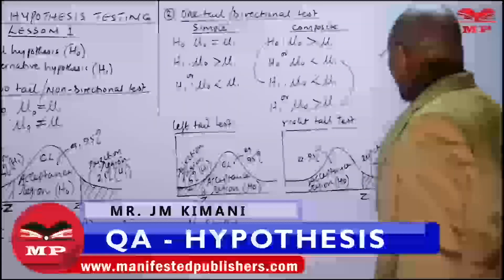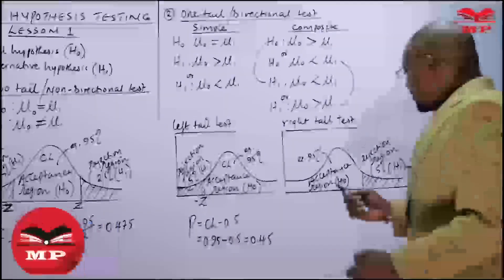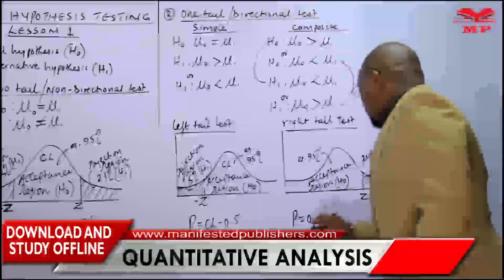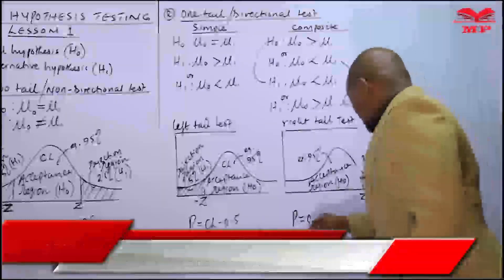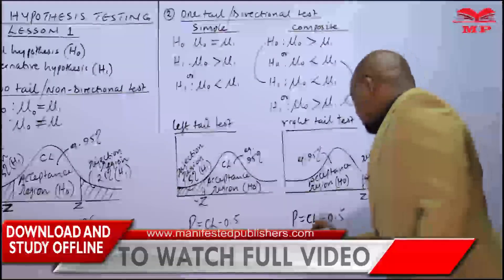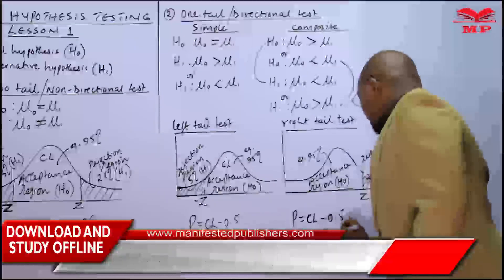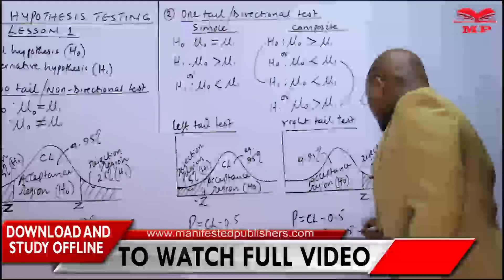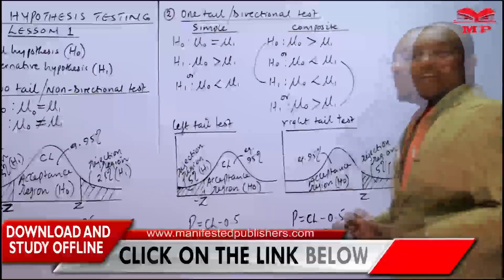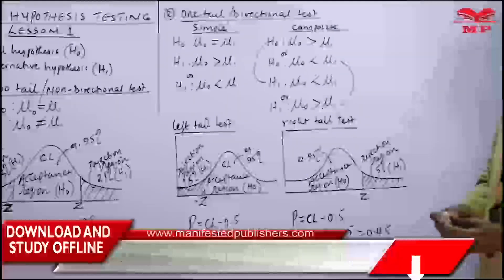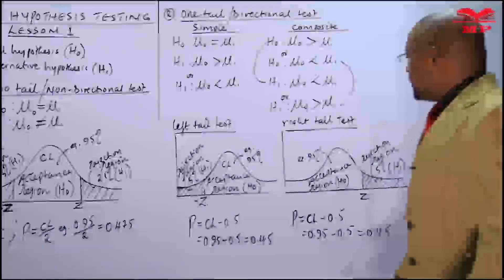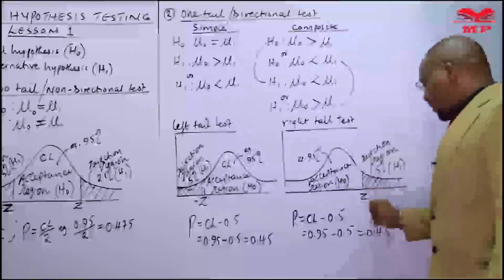For the right tail test, the same calculation applies — the probability is 0.95 minus 0.5, which is also 0.45. The only difference is that the value of Z in the left tail must be negative because we are on the negative side, but the value of Z on the right tail will be positive.